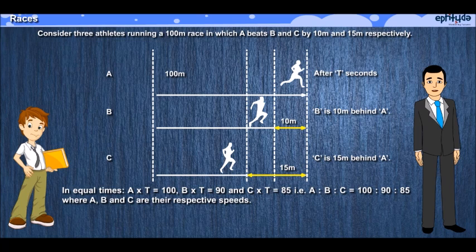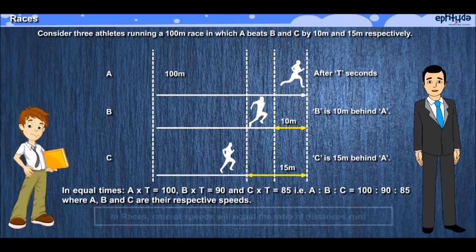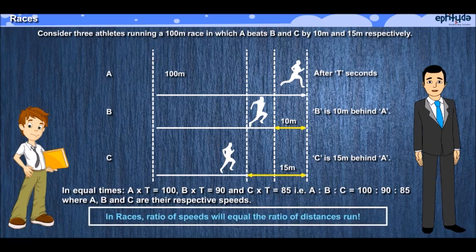What this implies is that in a race, when the margin of victory is mentioned, I can directly proceed to an equation that says the ratio of speeds will be equal to the ratio of distances run. All of this is because the time of travel is the same.